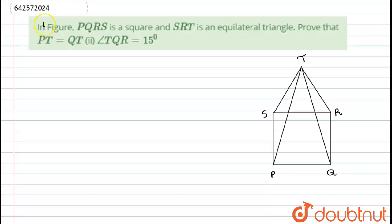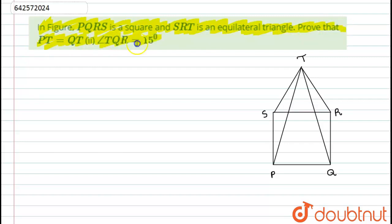Hello students, let's start with the question. Here we have given in the figure: PQRS is a square and SRT is an equilateral triangle. We need to prove that PT equals QT, and angle TQR is equal to 15 degrees. Let's start with the solution.